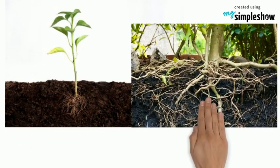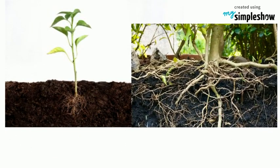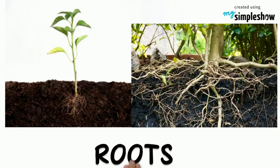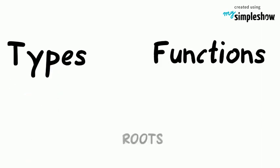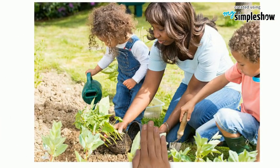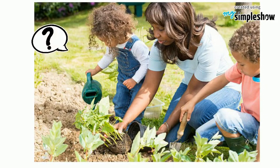Plants have different parts. One of the most important parts of a plant is the part you can't see — the roots. Let us talk about the types and functions of roots. Did you ever wonder what makes a plant stand? That's right. It's the part of the plant that is usually underground: the roots.